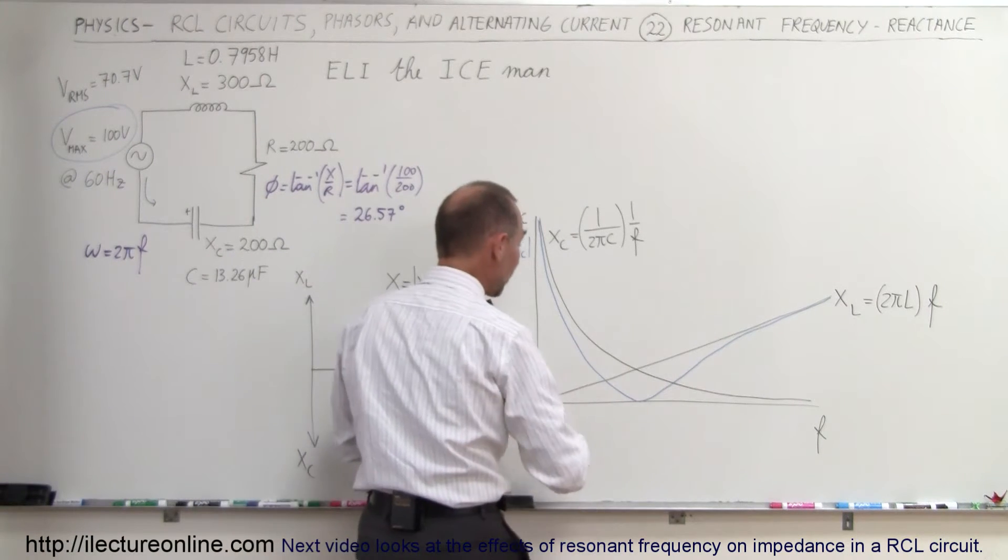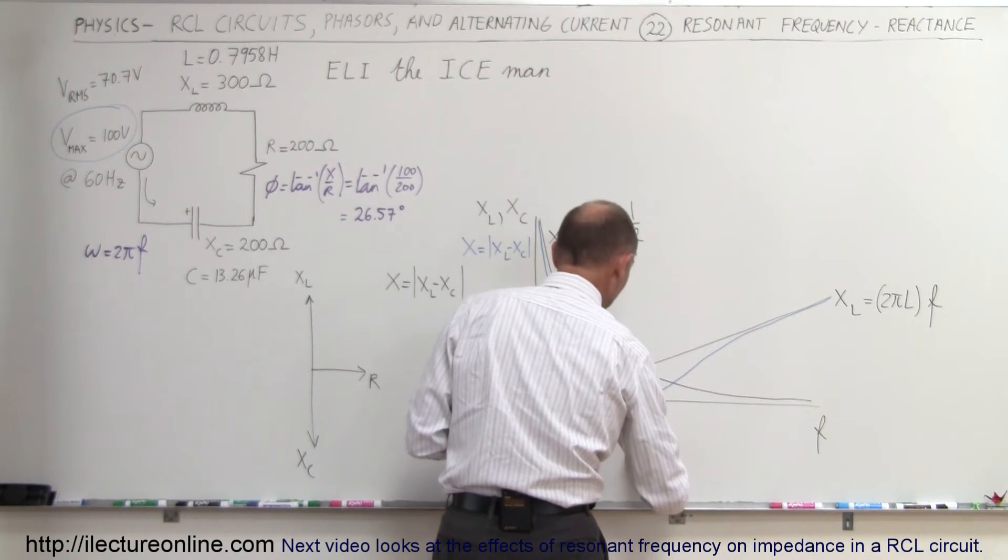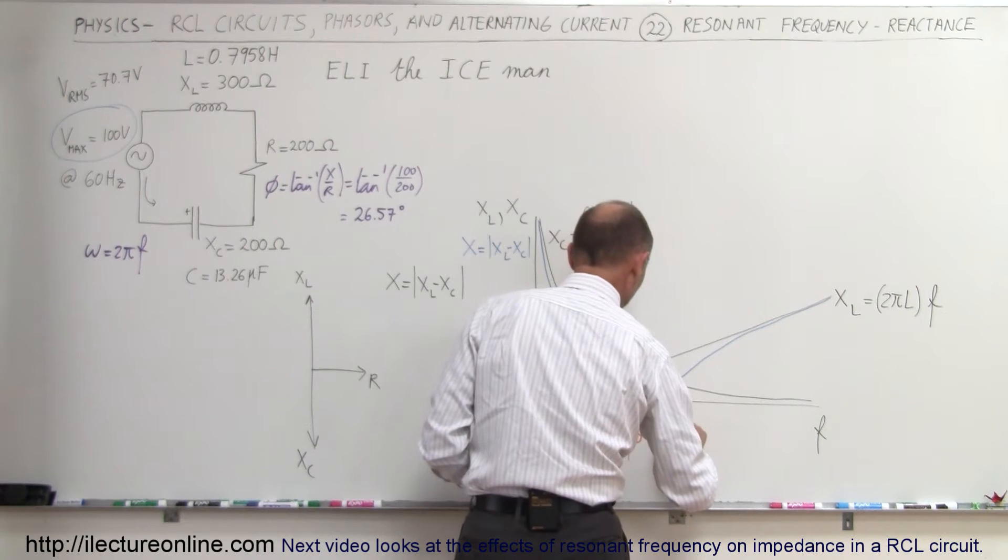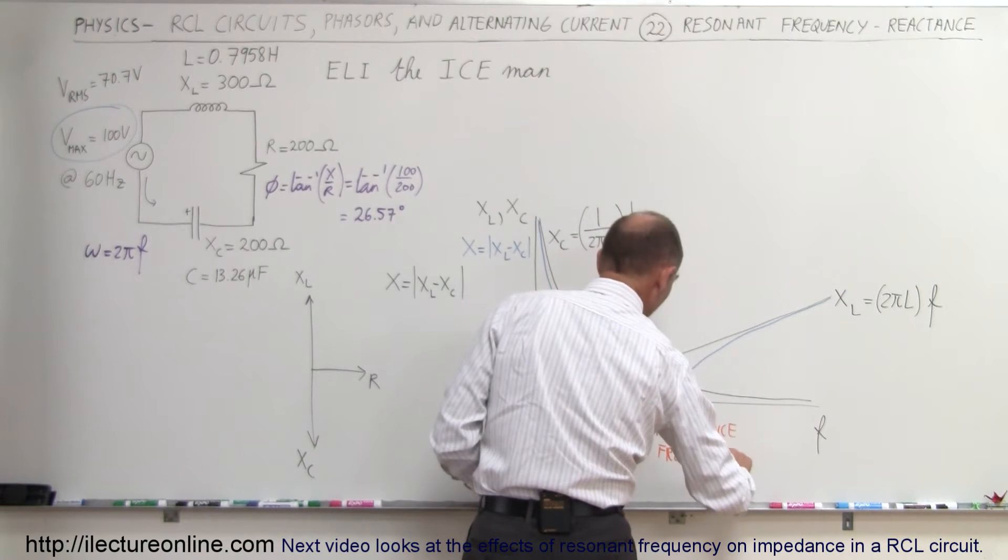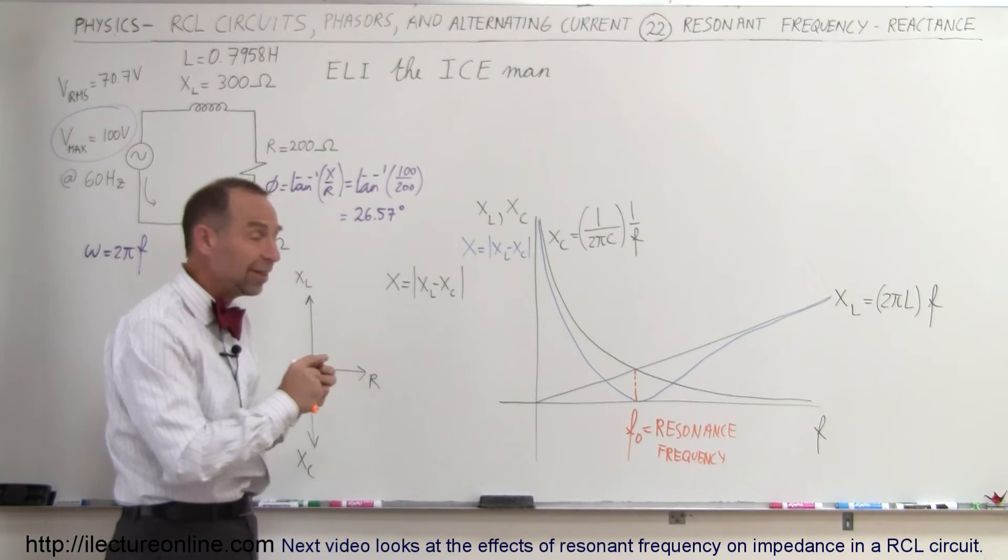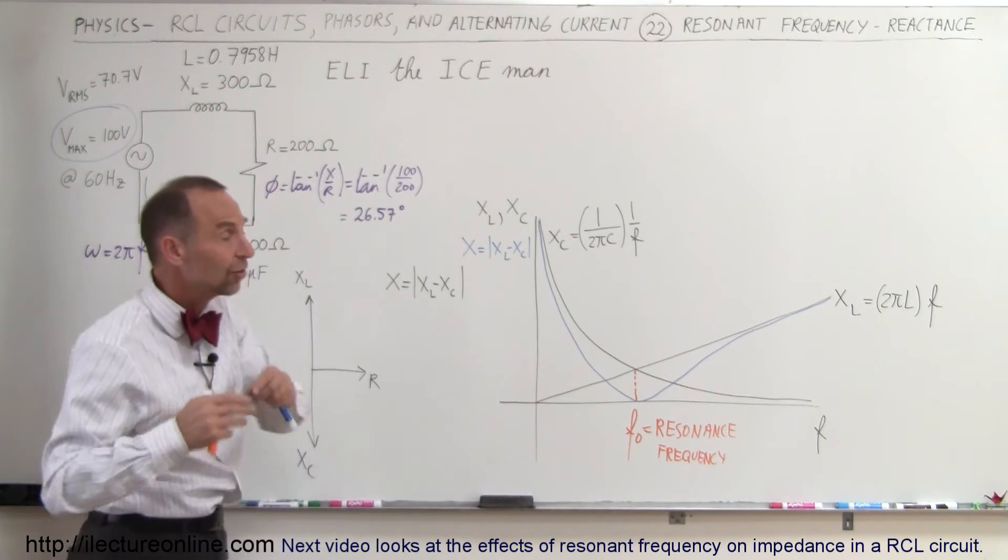Notice that at some value, which is called the resonance frequency, we'll call that f sub zero. At that frequency, the X sub L will equal X sub C. Since we have to subtract them from each other, there's no reactance in the circuit.